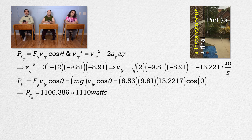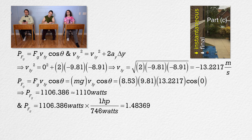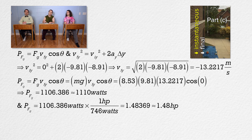Converting to horsepower: multiplying by one horsepower divided by 746 watts gives 1.48369, or 1.48 horsepower. The power being delivered to the pumpkin by the force of gravity right before it strikes the ground is equal to the power that could be delivered by roughly one and a half horses.